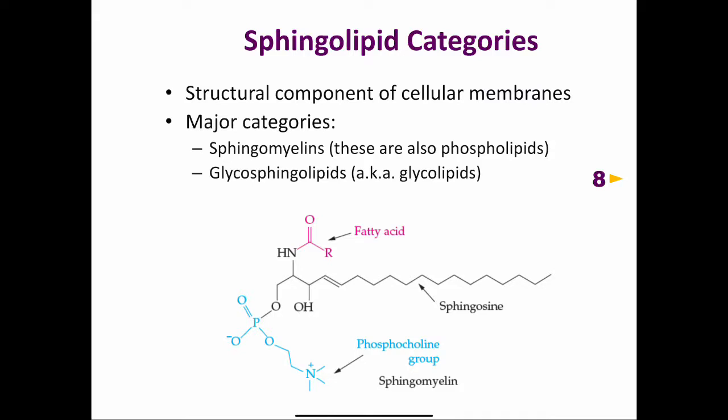The sphingolipids include the sphingomyelins and glycosphingolipids. The sphingomyelins are the only class of sphingolipids that are also phospholipids. In sphingomyelin, the acyl group of the fatty acid is bonded to the sphingosine through an amide bond. Here's the fatty acid shown here — they just put an R group, but you can see it's bound to sphingosine through this amide bond shown here.